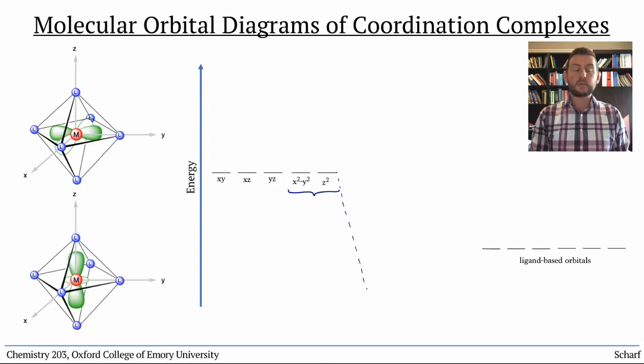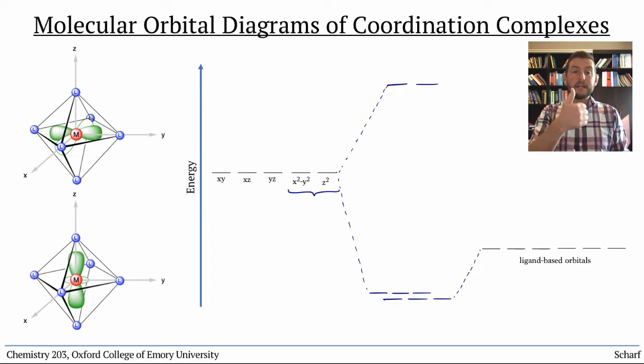The dx²-y² orbital has bonding interactions with the four ligands in the x-y plane. And the dz² orbital has strong bonding interactions with the two ligands along the z axis.